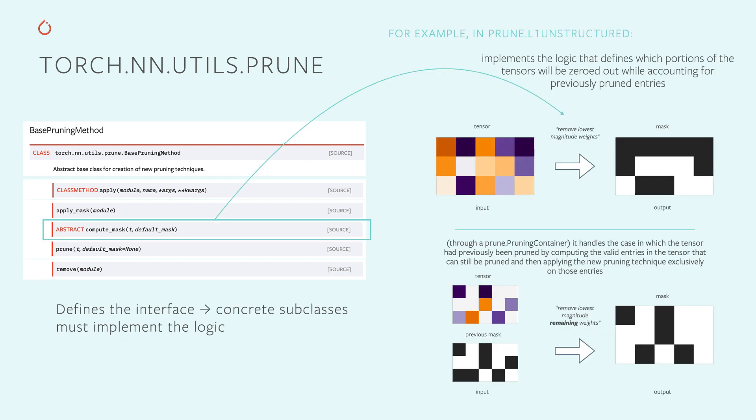But how does PyTorch pruning really work? Starting from its core functionality — the mask computation. Pruning is implemented by applying a binary mask onto the tensor that one wants to prune. In other words, we don't physically remove or drop connections or neurons; we simply generate and store a mask that identifies which connections are present and which have been pruned. The way this mask is computed is unique to each pruning technique. For example, L1 unstructured pruning zeroes out the connections with the smallest synaptic weight in absolute value. Compute_mask takes as input the weight tensor and returns a binary mask of the same shape that identifies the surviving entries.